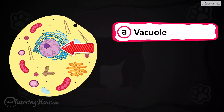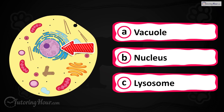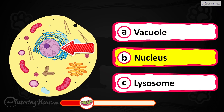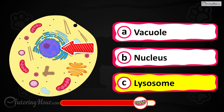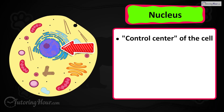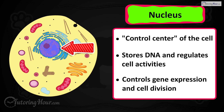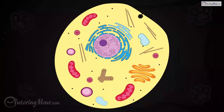Can you identify the highlighted part of the cell? Is it A) vacuole, B) nucleus, or C) lysosome? The answer is the nucleus, known as the control center of the cell. It stores DNA and regulates cell activities like growth, metabolism, and reproduction. It also controls the expression of genes and cell division.